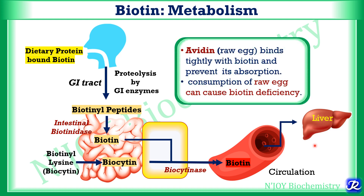Avidin, which is present in raw egg, binds tightly with biotin and prevents its absorption. Avidin is present in the white of egg, and that is why consumption of raw egg can cause biotin deficiency.